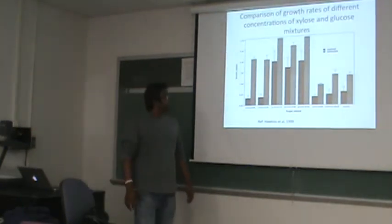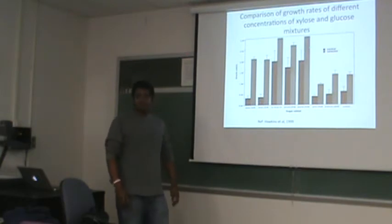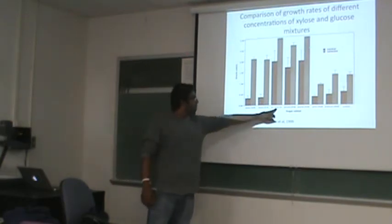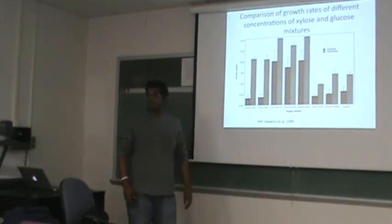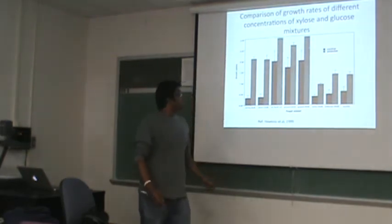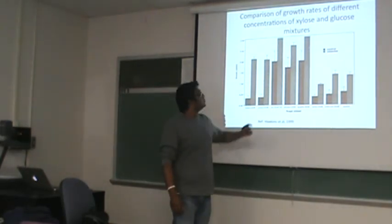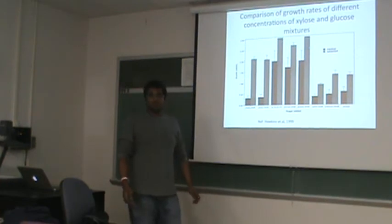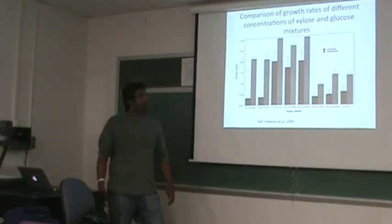Based on these experiments, they actually conducted another set of experiments with mixtures of feedstocks. So you can see that these are the xylose and glucose mixtures, which is like 50% of xylose and 50% of glucose. And when compared with the 100% glucose, you are actually able to get almost similar biomass growth. But they have not done any kind of experiments to find out the lipid content.